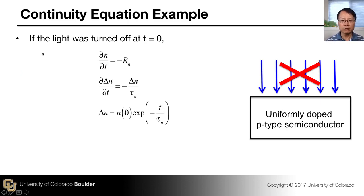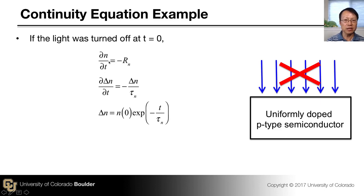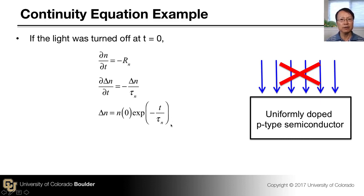The continuity equation reduces to: dn/dt = −recombination rate = −Δn/τ. Since n = n₀ + Δn and n₀ is constant, dn/dt = d(Δn)/dt. This simple first-order differential equation gives an exponential solution: the excess carrier concentration decays exponentially after the light is turned off, with a time constant equal to the carrier lifetime.